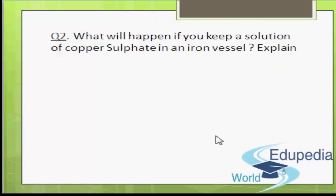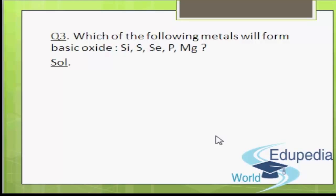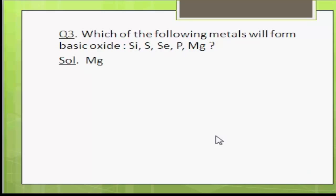Coming to question number 3: which of the following elements will form basic oxides? We all know that only metals form basic oxides. Out of the given elements, magnesium is a metal and the other elements are either non-metals or semi-metals. So only magnesium will form a basic oxide, that is MgO.